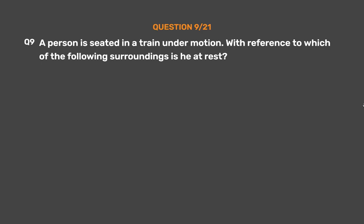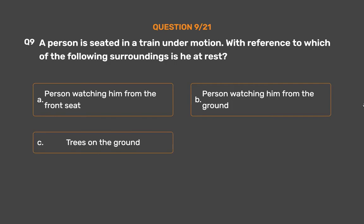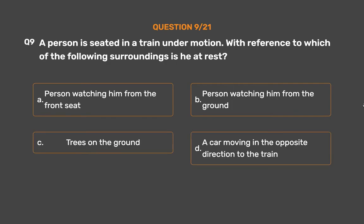Question No. 9. A person is seated in a train under motion. With reference to which of the following surroundings is he at rest? Option A: Person watching him from the front seat. Option B: Person watching him from the ground. Option C: Trees on the ground. Option D: A car moving in the opposite direction to the train.